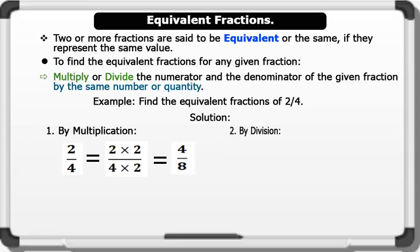2. By division. We divide the numerator and the denominator of the given fraction by 2. Therefore, 2/4 equals 2 divided by 2 over 4 divided by 2. This gives us 1/2.